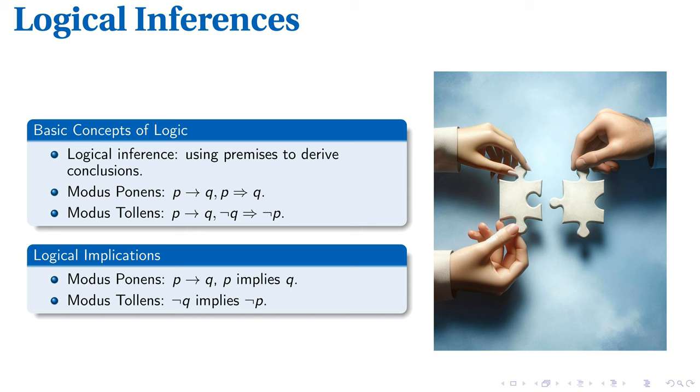Tackling modus ponens, we interpret the logic as if P then Q, and when P is true, it implies that Q is valid. On the flip side, modus tollens interprets, if not Q, then we infer not P. Computer science majors will recognize these logic principles as foundational to the construction of software and algorithms, threading consistent reasoning throughout code bases.